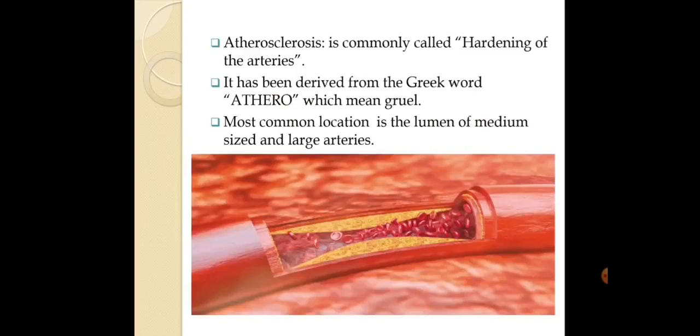Atherosclerosis is commonly called hardening of the artery. It is a condition where plaques form within the wall of the artery. It is a specific type of arteriosclerosis, which is the generalized condition of hardening of the arterial wall. Atherosclerosis is more specific to the build-up of lipids that cause narrowing, hardening, and resistance to blood flow.